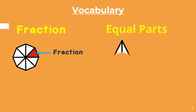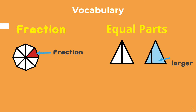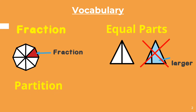For example, this triangle has two equal parts, and this triangle does not have equal parts because one side is larger than the other. Partition means to separate or divide an object into parts.